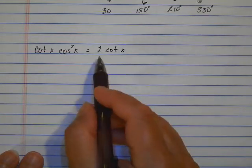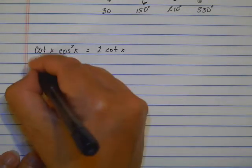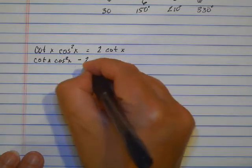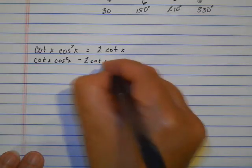So the first thing I want to do is set this equal to 0. Cotangent x cosine squared x subtract 2 cotangent x equals 0.